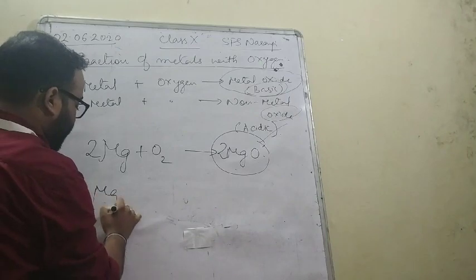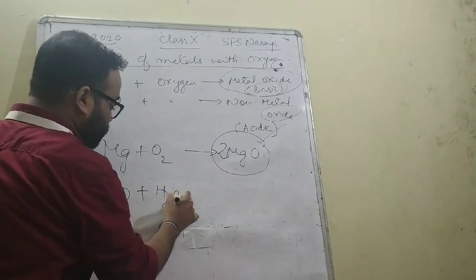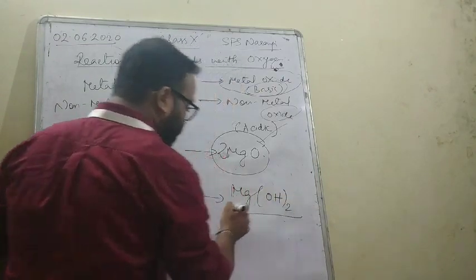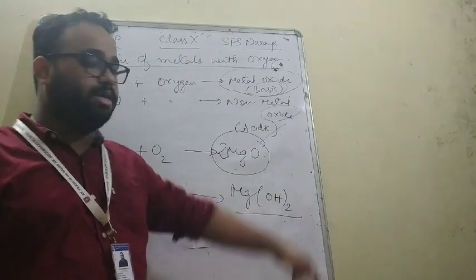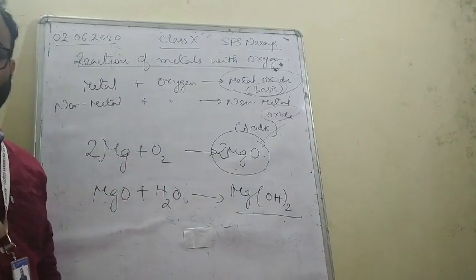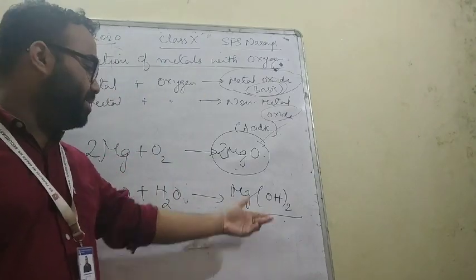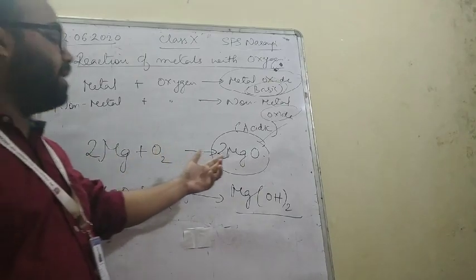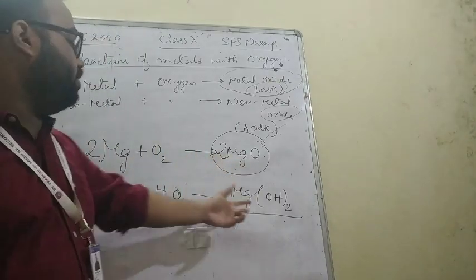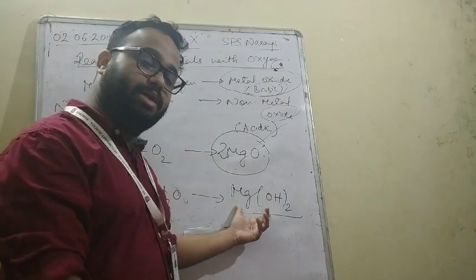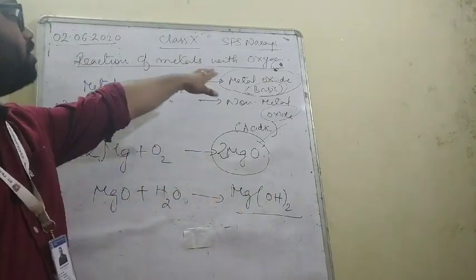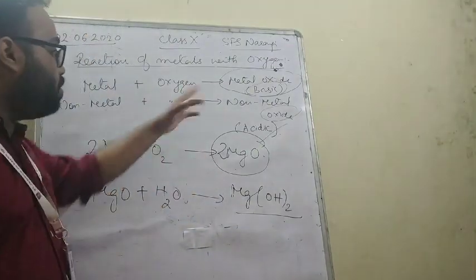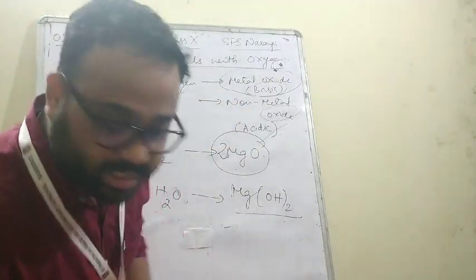If you put magnesium oxide in water, it will give you magnesium hydroxide, which is basic in nature. So magnesium plus oxygen gives you magnesium oxide; if you dissolve it in water it gives you magnesium hydroxide — so metallic oxides are basic in nature. But non-metallic oxides are acidic.